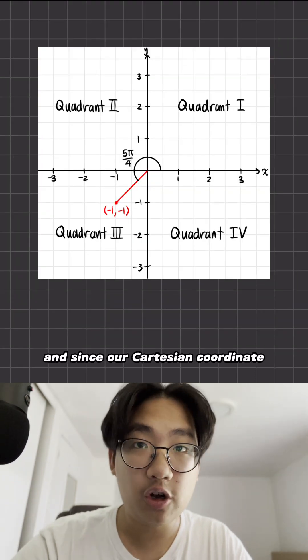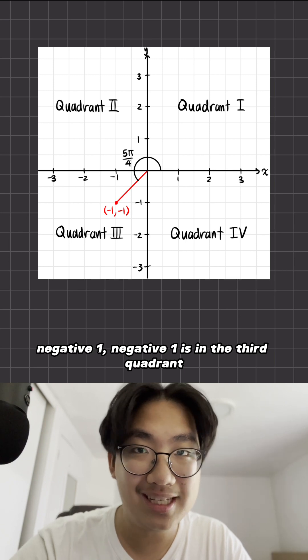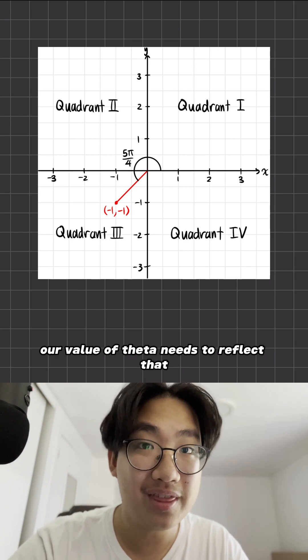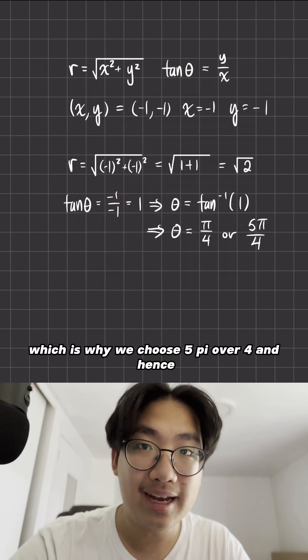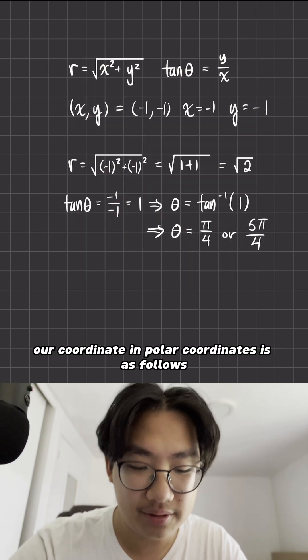Since our Cartesian coordinate negative one, negative one is in the third quadrant, our value of theta needs to reflect that, which is why we choose five pi over four. Hence our coordinate in polar coordinates is as follows.